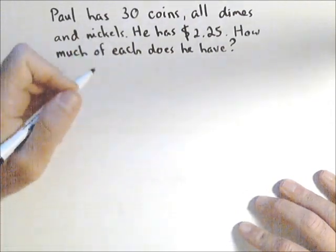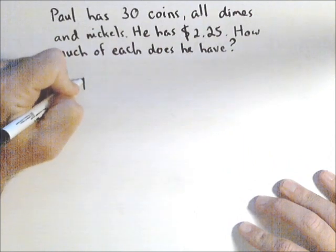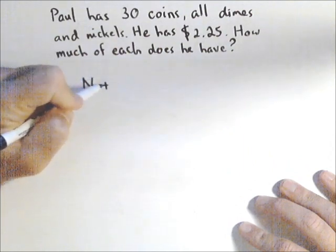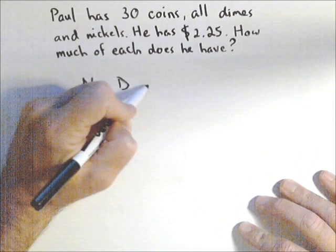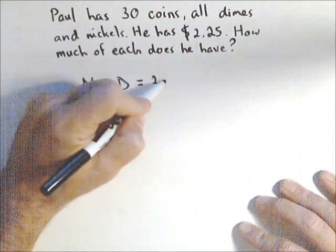Well, he has a total of 30 coins, so if we let N be the number of nickels and D be the number of dimes, then N plus D has to equal 30.